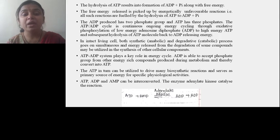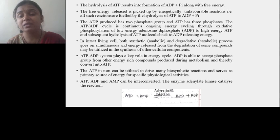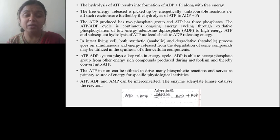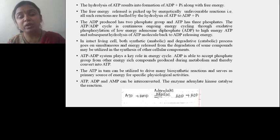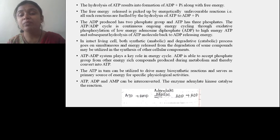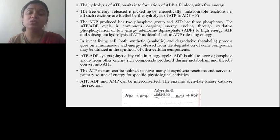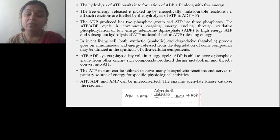ATP, ADP, and AMP can be interconverted. The enzyme adenylate kinase catalyzes this reaction. In this reaction, ATP — adenosine triphosphate — combines with AMP — adenosine monophosphate. The ATP donates one of its phosphates to AMP, converting AMP into ADP. When ATP donates its phosphate to AMP, ATP itself is also converted into ADP. Therefore two molecules of ADP are produced as products.